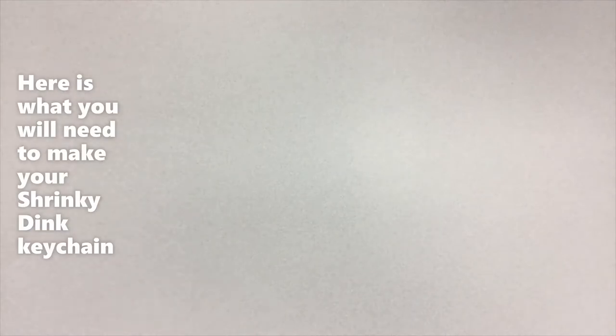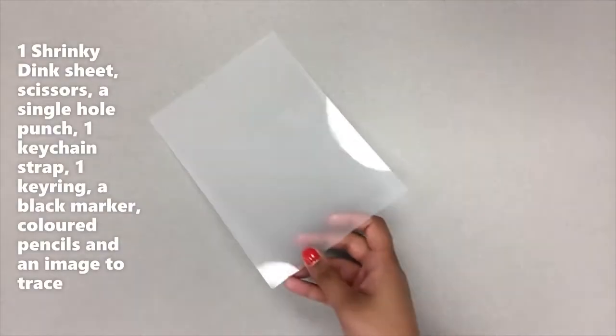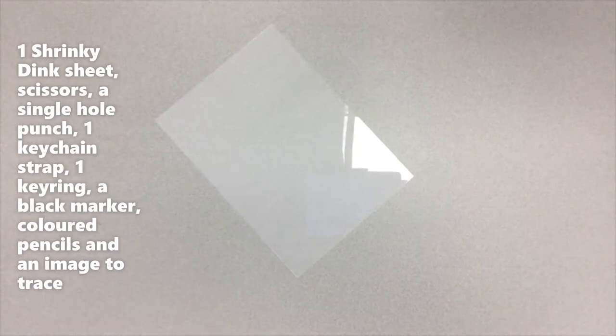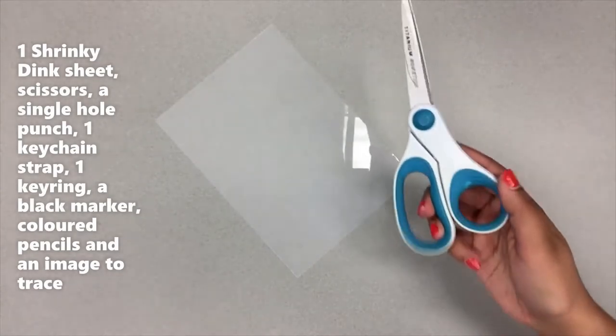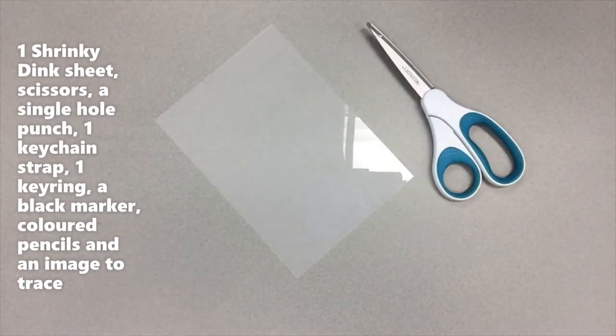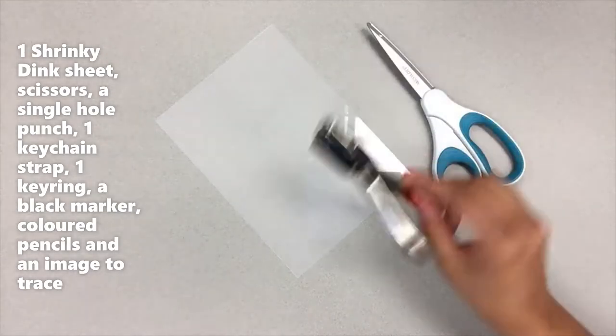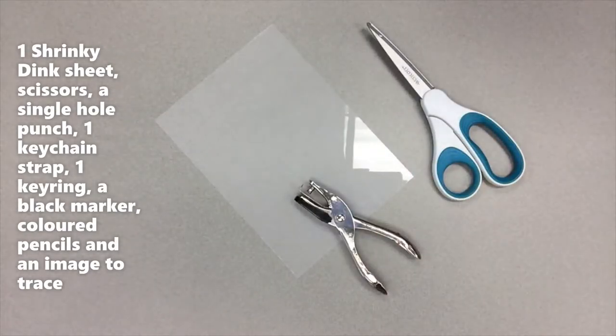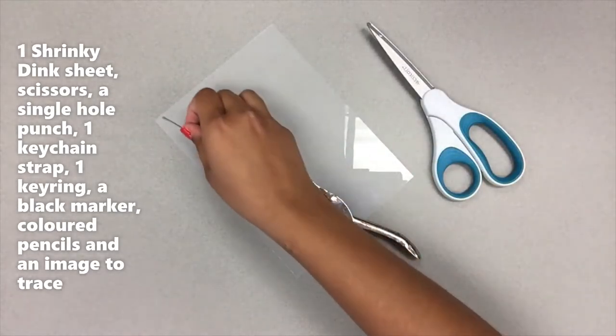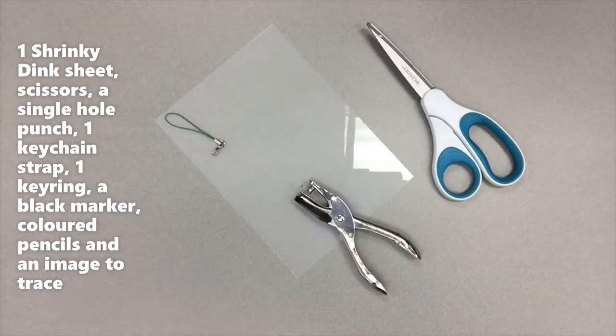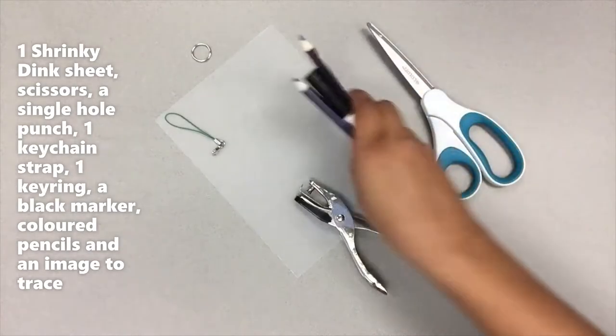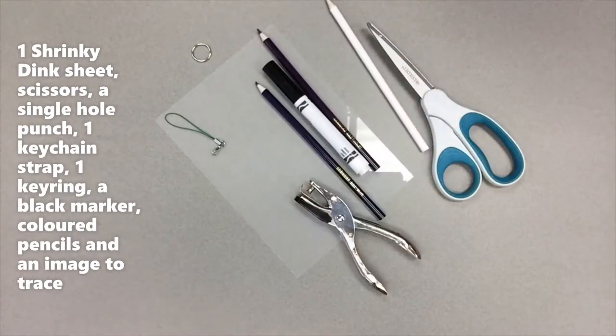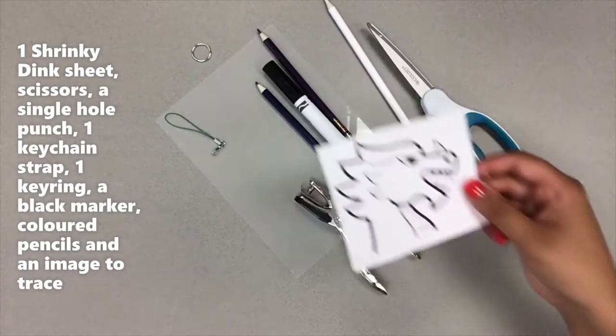Here is what you will need to make your Shrinky Dink keychain: one Shrinky Dink sheet, scissors, a single hole punch, one keychain strap, one key ring, a black marker and colored pencils, and an image to trace.